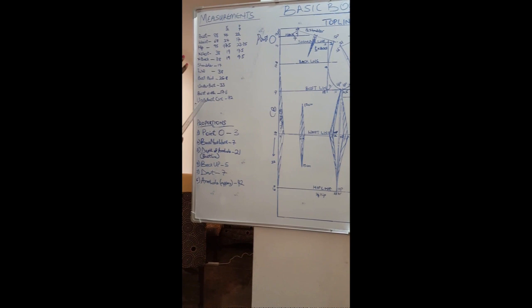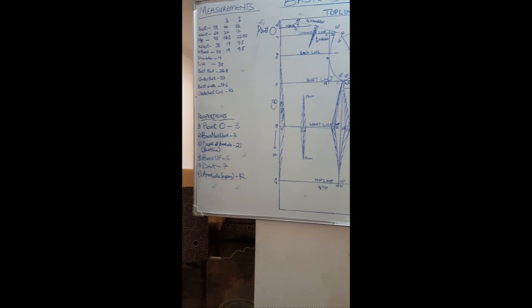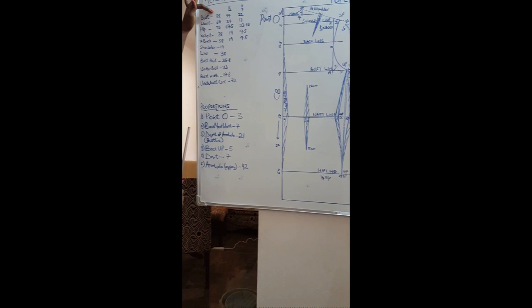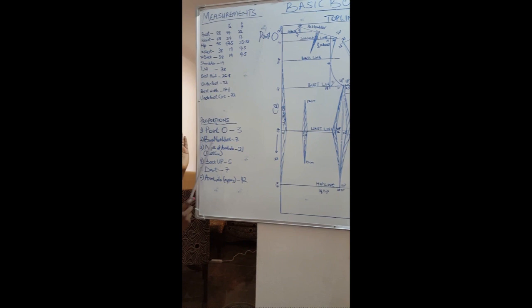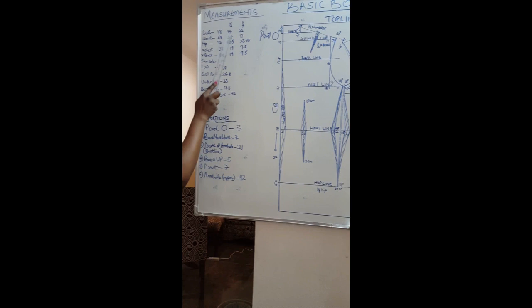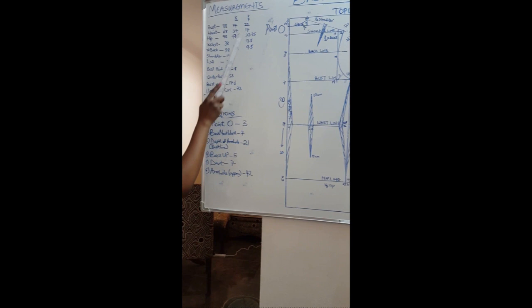These are the measurements I am using: the bust, the waist, the hip, across chest, across back, shoulder length to waist, bust point on the bust, bust width, and bust circumference. These are the proportions corresponding to my bust size. You have this in the measurement book I shared with you earlier, so you have to select the proportions that correspond to your bust size. I have divided my bust, waist, hip, across chest, and across back by two and by four and written them down.